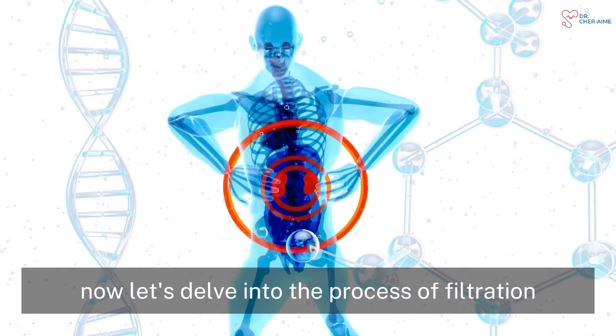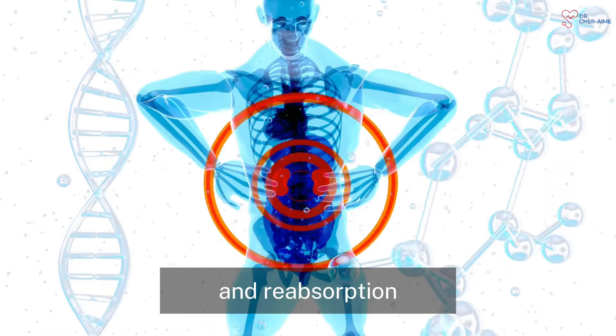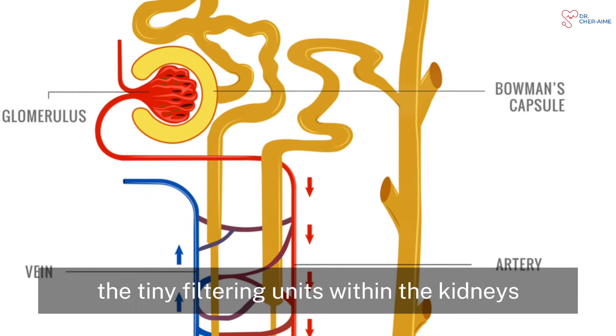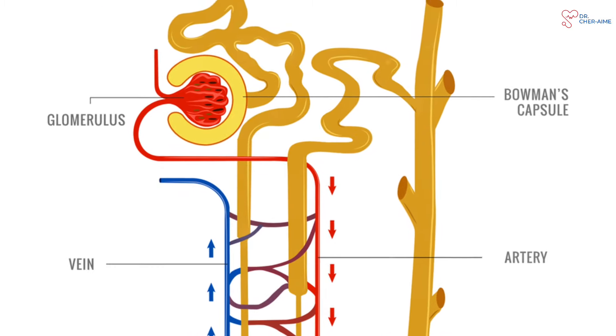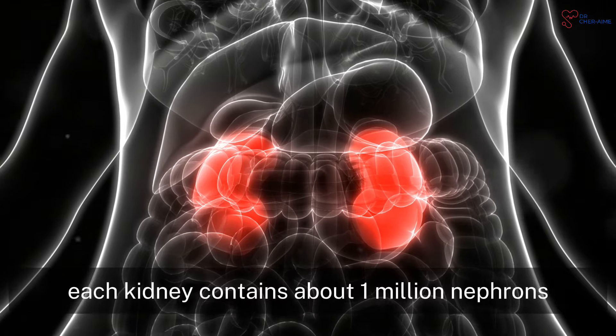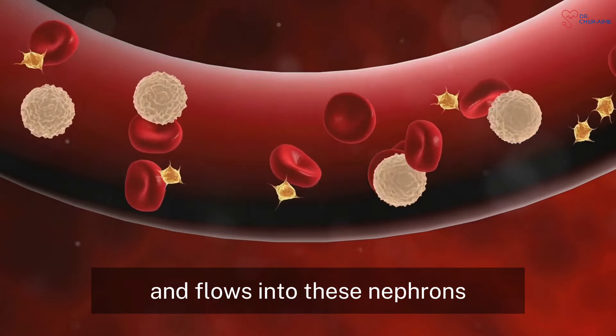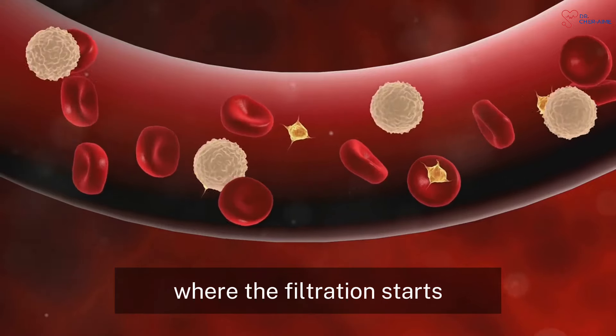Now, let's delve into the process of filtration and reabsorption. The journey begins in the nephrons, the tiny filtering units within the kidneys. Each kidney contains about 1 million nephrons. Blood enters the kidneys through the renal artery and flows into these nephrons, where the filtration starts.